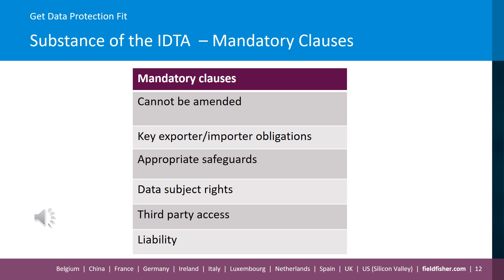These amendments can only be made provided that the changes do not reduce the appropriate safeguards. Key exporter obligations include complying with UK data protection laws when transferring data to the importer, carrying out reasonable checks on the importer's ability to comply with the IDTA, and cooperating with the importer. Key importer obligations include only processing transferred data for the identified purpose, keeping a written record of its processing to demonstrate compliance with the IDTA, cooperating with and providing reasonable assistance to the exporter, complying with a number of obligations if there is a data breach, and also when engaging subcontractors and transferring data onto third parties.